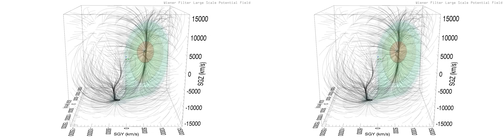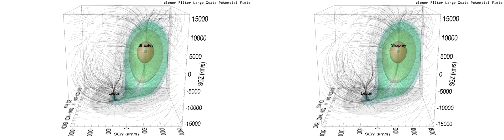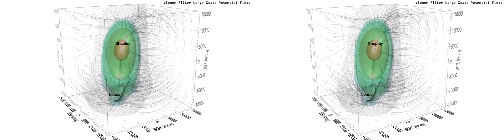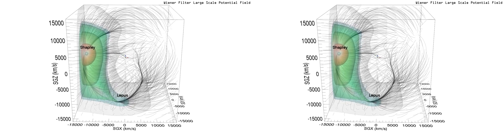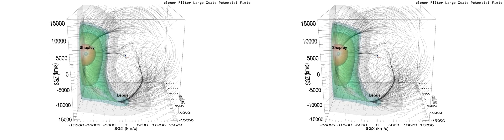Here we superimpose the potential field responsible for the peculiar velocity flow. The Shapley galaxy concentration is the dominant local feature. The secondary feature in the direction of Lepus appears to be connected.